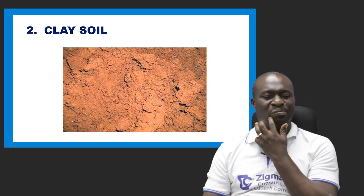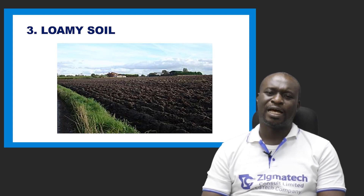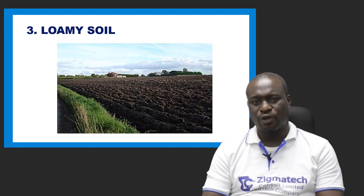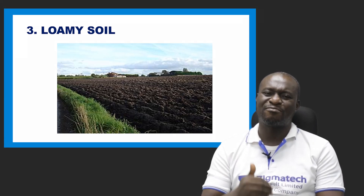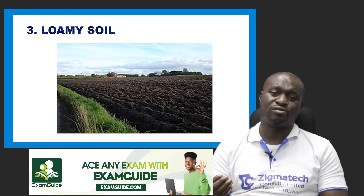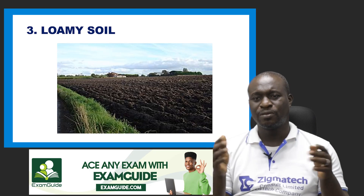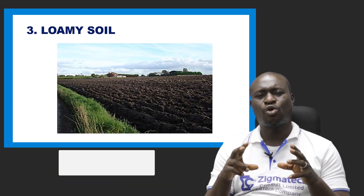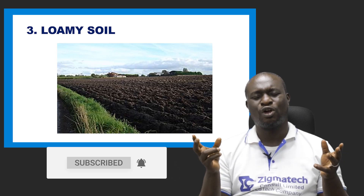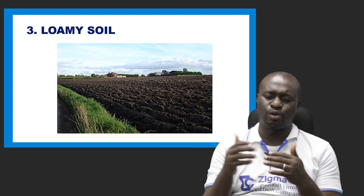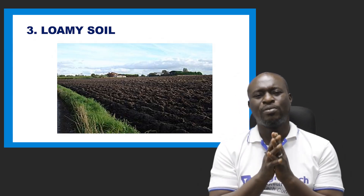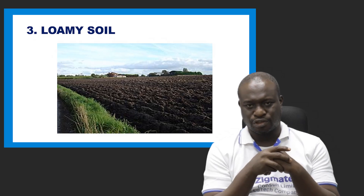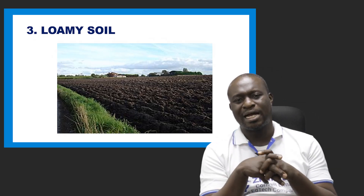Another type of soil is loamy soil. Loamy soil is dark brown in color, rich in humus with a high humus content. It is made up of clay and sand in the right proportion and has a moderate water retaining capacity — not too porous and not too low in porosity. Loamy soil is the best soil for planting and supports large, rich vegetation.